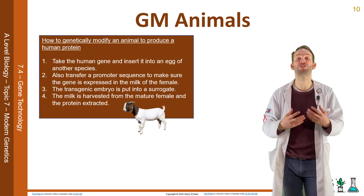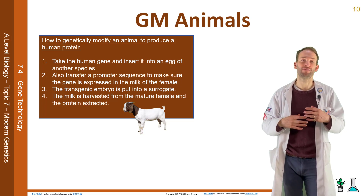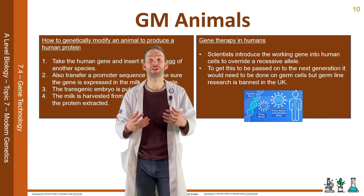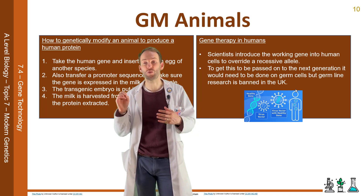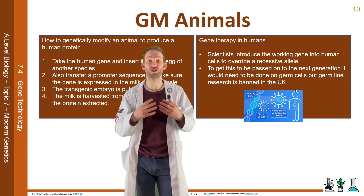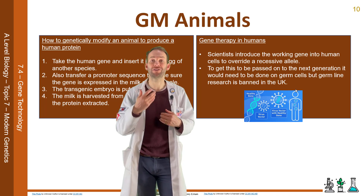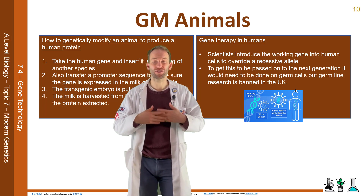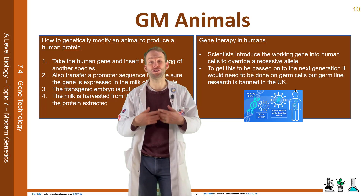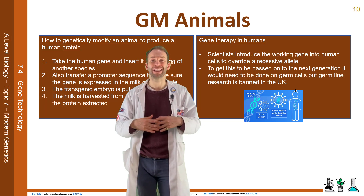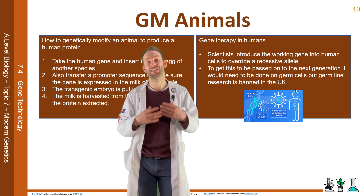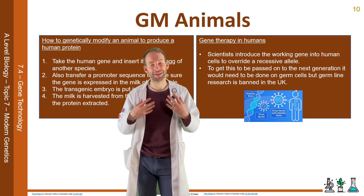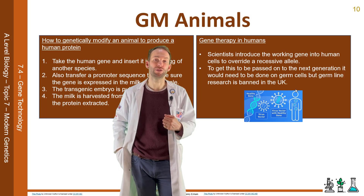One area of genetic engineering with humans is gene therapy. This is where scientists introduce a working gene into human cells to override a recessive allele that's already there. But to get this passed on to the next generation means doing it on germ cells, and germline research is banned in the UK. So gene therapy hasn't been that effective yet in terms of making real treatments for humans.